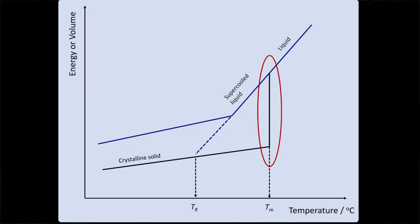That was helpful in earlier discussions, but it was somewhat of a simplification, because it implies there is a sudden temperature at which the viscosity of the supercooled liquid becomes so high the material fills and behaves like a solid, and we form a glass. That allowed us to discuss glass formation and the glass transition temperature, but in reality glass formation is a little bit more complicated than this.